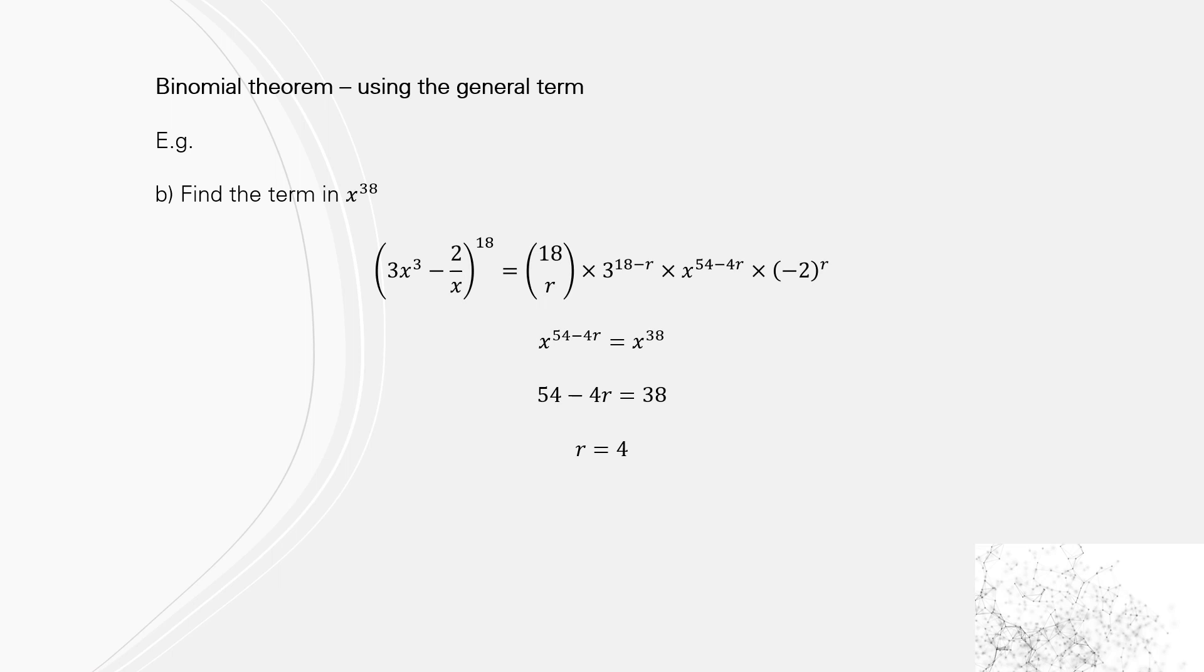Normally if you want to find the term in x^38, we'd actually go through the steps and work it out. The first term would be 3x³ to the power of 18, so the x would be to the 54. Then the next one would be 3x³ to the power of 17 and 2/x to the 1, etc., until you got x^38. We're just trying to come up with a quicker way.